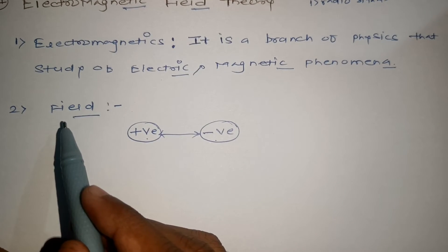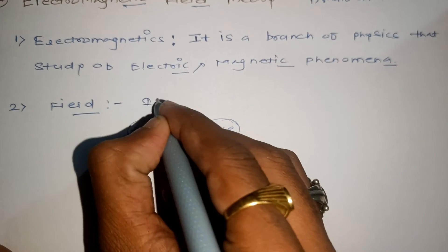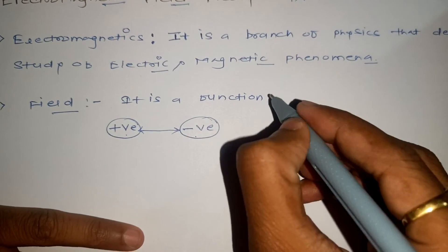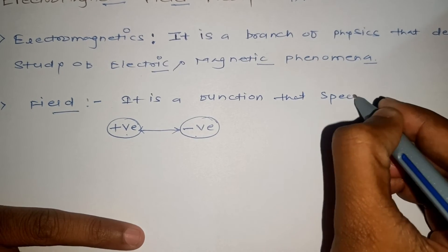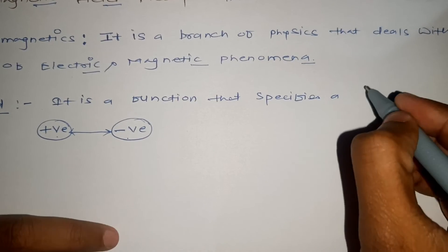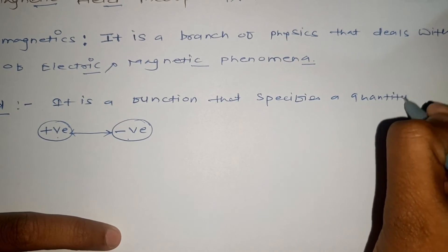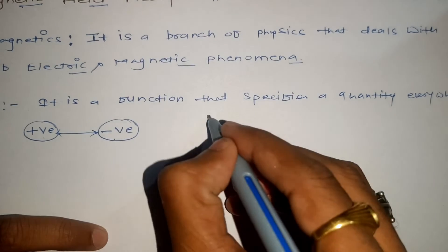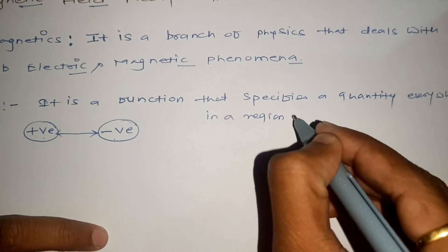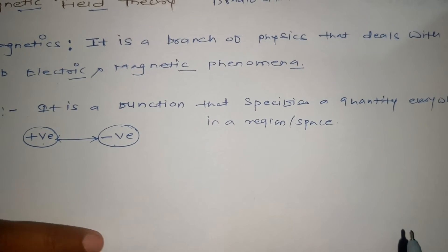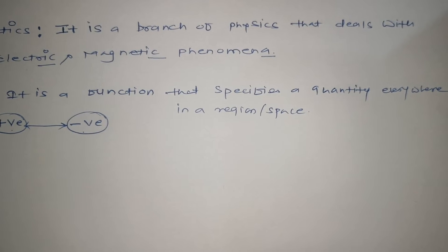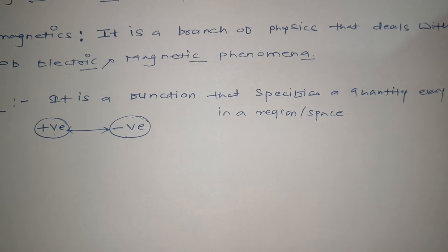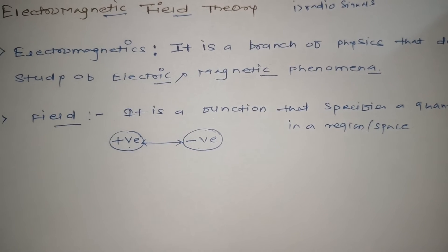If we specify a more formal definition: a field is basically a function that specifies a quantity everywhere in a region or space. So it could be a function that specifies a quantity everywhere. In our example, we are experiencing a force of attraction, and this is what we call a field.